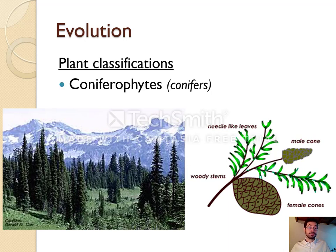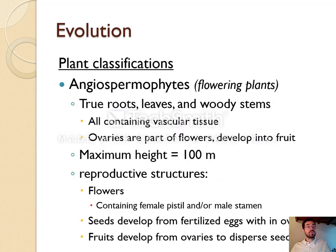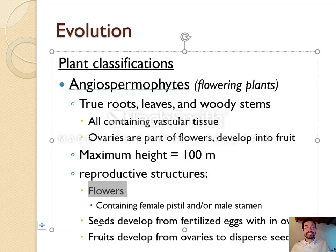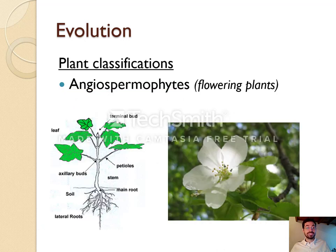The last phylum to know is angiospermophytes — flowering plants. These have true roots, leaves, and stems. They reproduce using flowers and fruit, with pollen and seeds contained within the fruit. They include all grasses and almost all trees. When you picture a typical plant, you're probably thinking of an angiosperm — they are some of the most successful plants in the world.